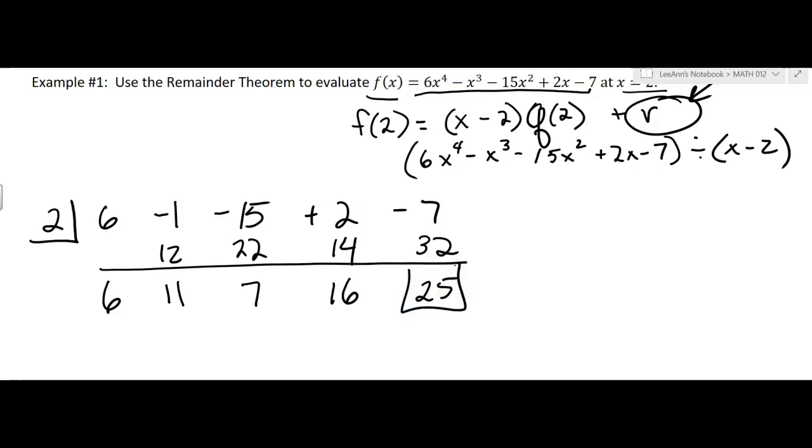Okay, then that means f of 2 is equal to 25. If you evaluated the function at 2, you would get 25. And that's one of the beauties of synthetic division is being able to use the remainder theorem.